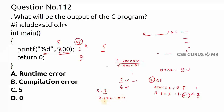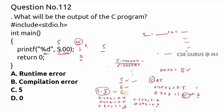For 5.2, the decimal part .2 × 2 = .4, × 2 = .8, × 2 = 1.6 (take .6), × 2 = 1.2 (take .2), and it never reaches zero — so you get garbage. Since here the value is 5.00 and .00 × 2 = 0, the answer is zero, not five. The answer to question 112 is zero — this is a special case when printing a float with %d.